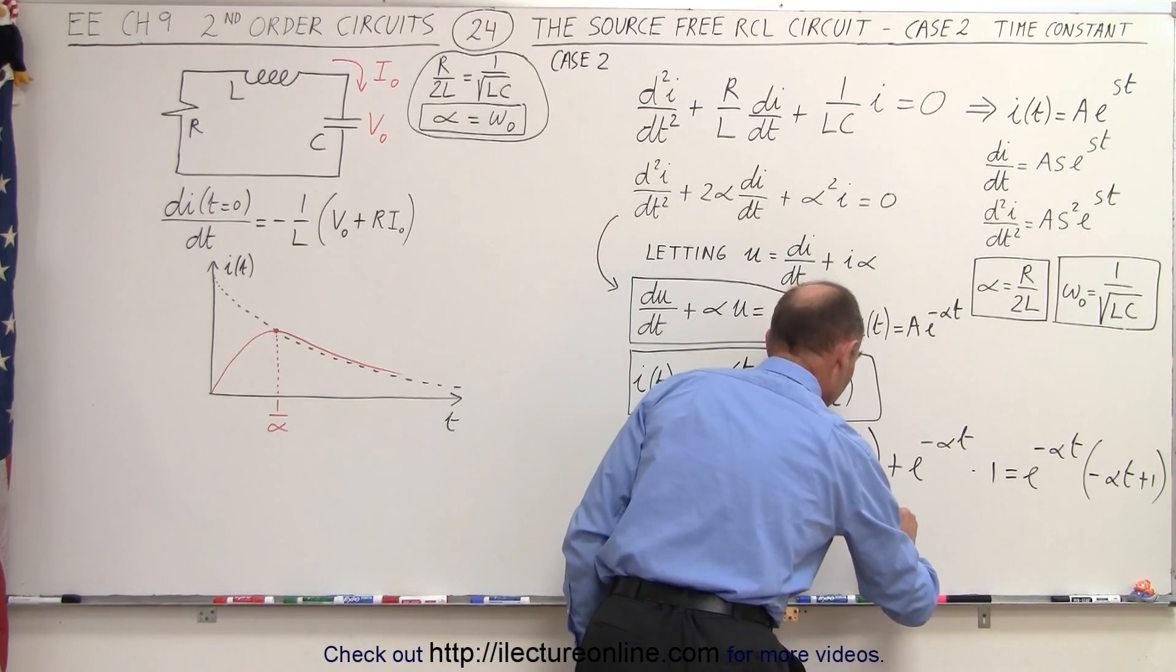So set e to the minus alpha t times minus alpha t plus 1 equal to 0. And so of course the only way that that can be equal to 0 is if e to the minus alpha t equals 0. That's when t equals 0 and when we come over here that would be a minimum value of the function. And then the next solution would be when this quantity right here is equal to 0.